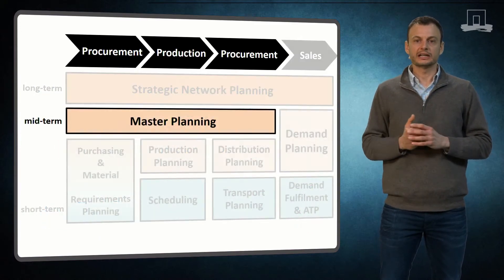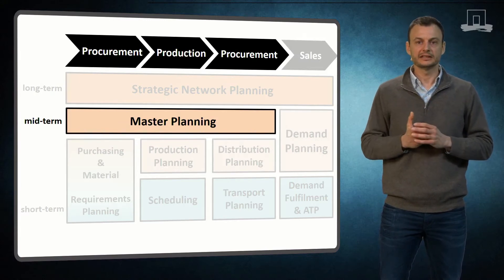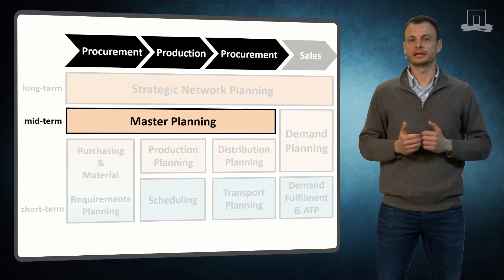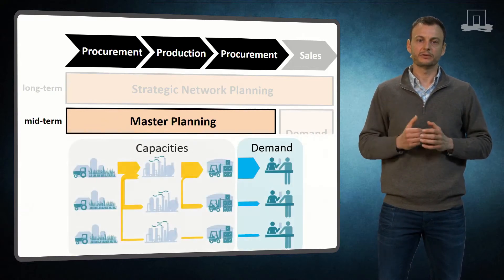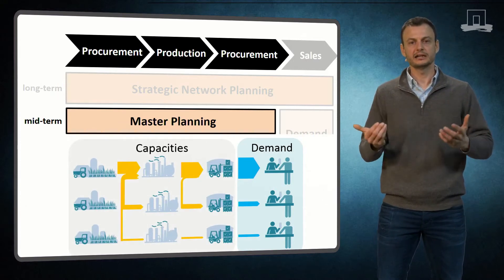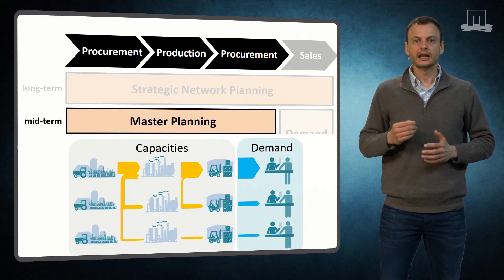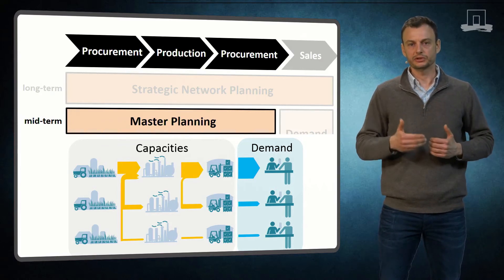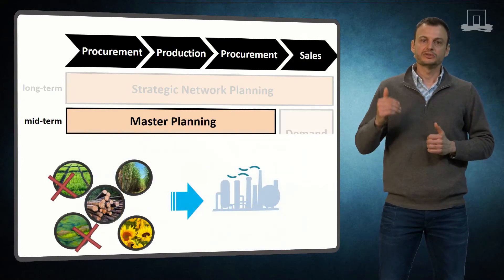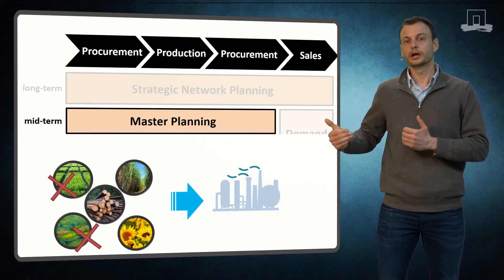Another very important activity is the master planning of the supply chain. It involves medium term planning decisions and focuses on finding the most efficient way to fulfill the demand. The goal is to balance the demand forecast with available capacities and to assign demands to specific sites in order to avoid bottlenecks. The medium term planning horizon allows for adjustments on the available resources and capacities. Master planning also accounts for restrictions of the procurement since some raw materials may become a bottleneck for the whole supply chain.